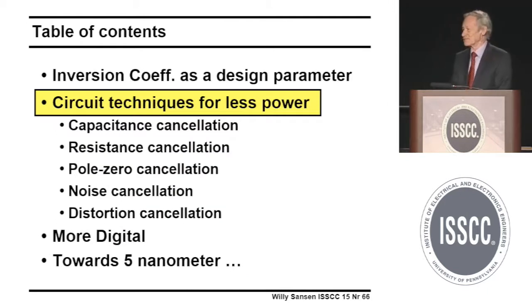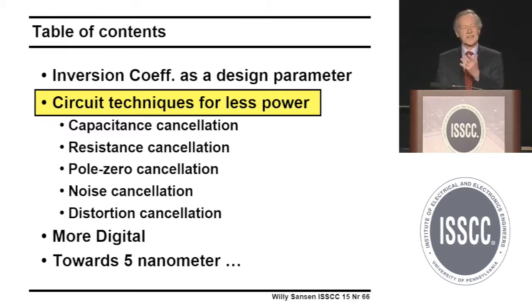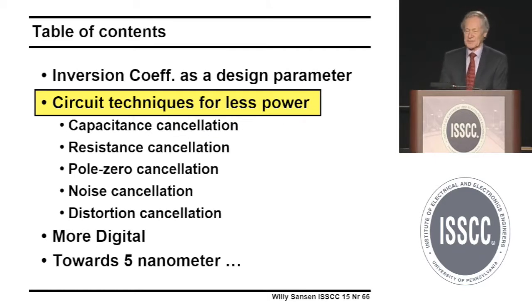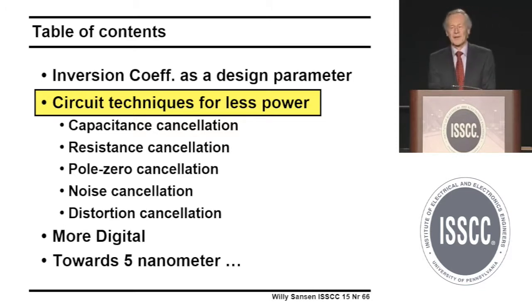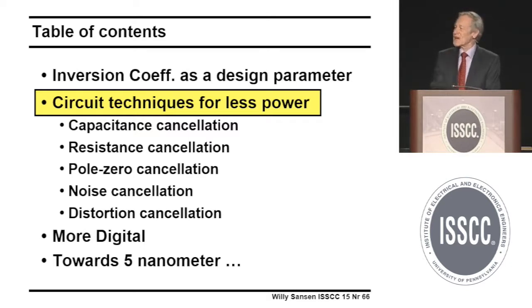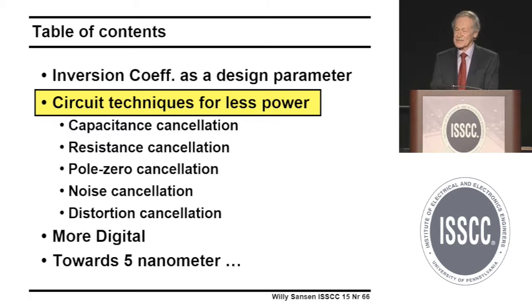Now, taking two transistors — all things we don't like, we have to get rid of. That means: cancelling capacitance, cancelling resistance (which is power consumption), cancelling poles by using zeros to cut gain at high frequencies, noise cancellation, and distortion cancellation. I list these to figure out which techniques are going to emerge when we go to 5 nanometer CMOS.